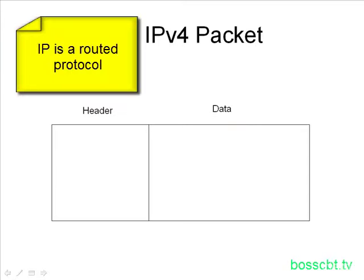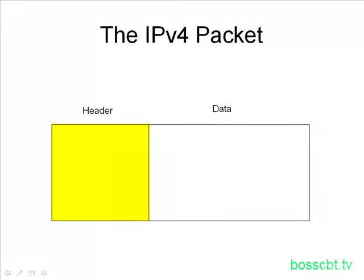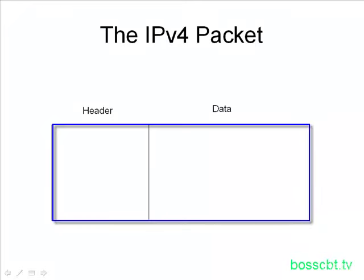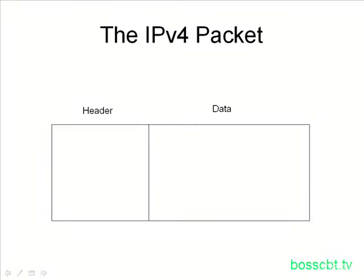First we have the header — the IP header — and within it there are a bunch of different fields with a lot of information. That information is used by routers to figure out what to do with the packet and how to handle it. After the header is the data, which is the user data we're looking to send across the network. These two things together make up the IP packet. You may refer to both as the IP packet, or sometimes just the IP header, which refers only to the header portion.